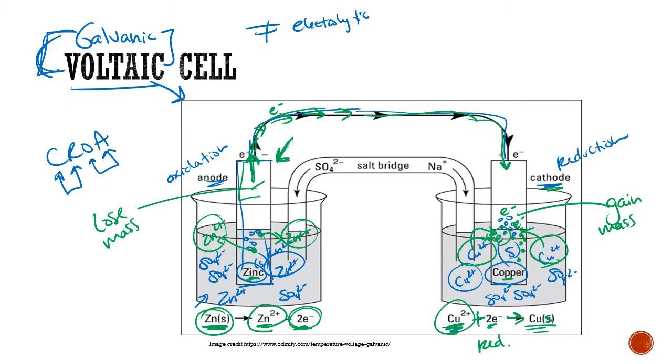Those zinc pieces are going into the solution as ions — the anode loses mass. The copper cathode gains mass because ions are becoming atoms and sticking to the electrode.